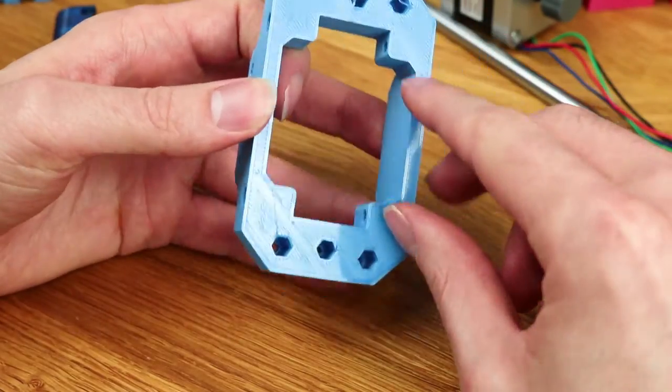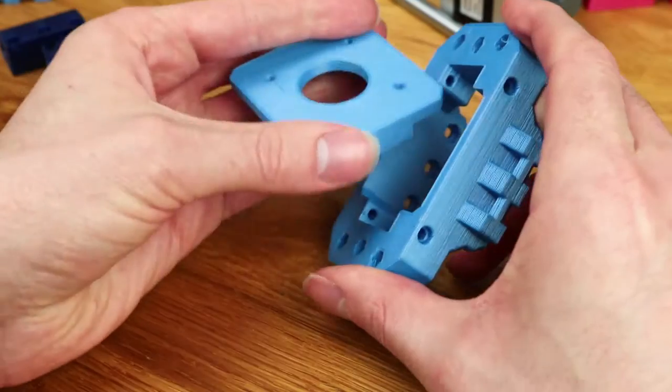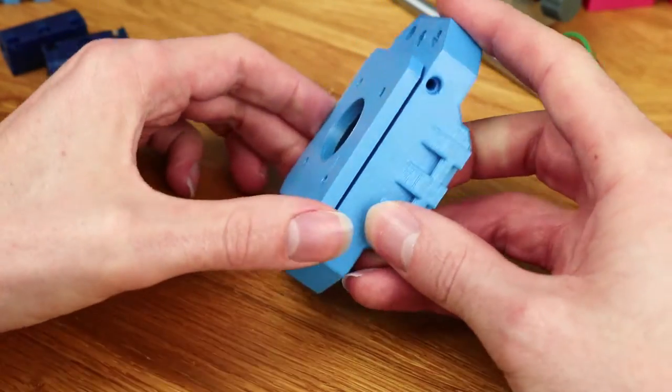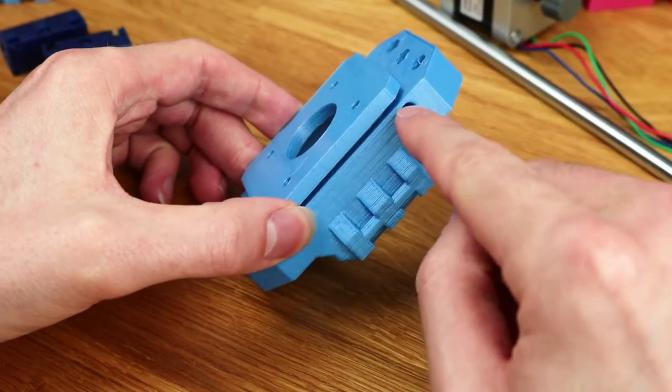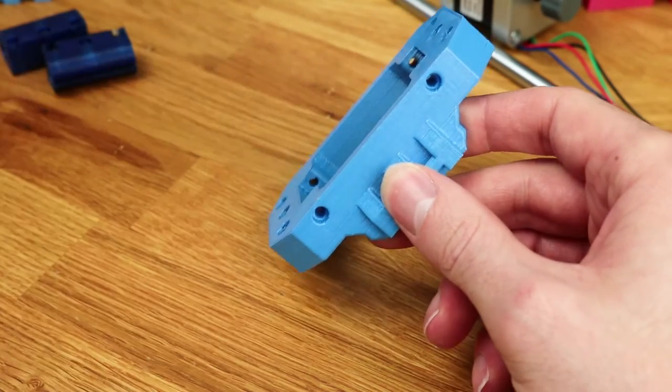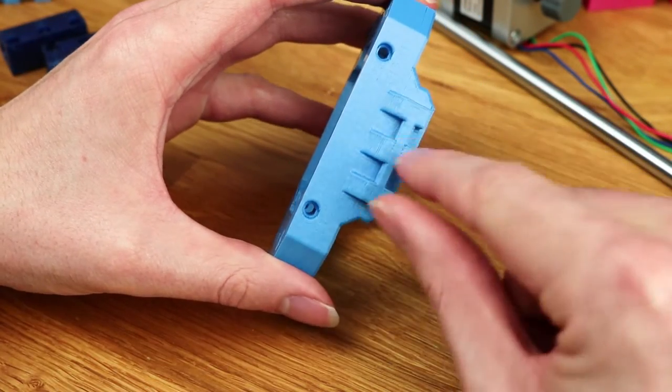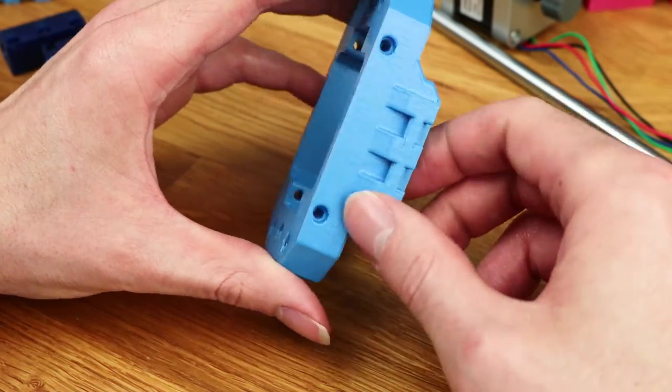The other parts that are the same is this mounting on the front. So the stepper motor still mounts in the same sort of way and the screws come in the side. Very similar. This part's still the same. Belts go through, tighten with zip ties.